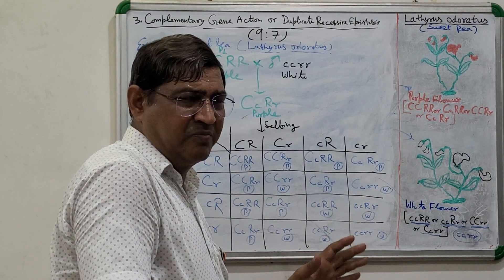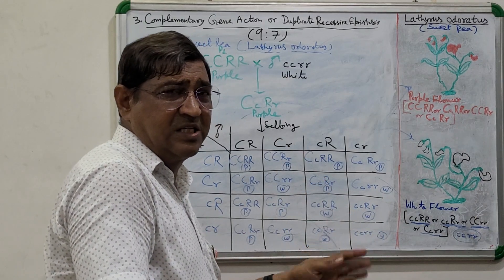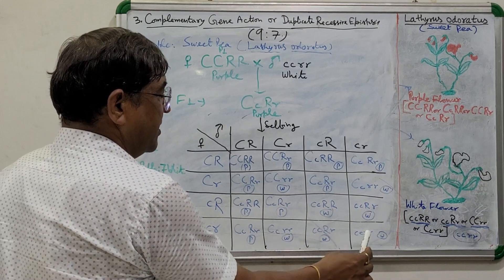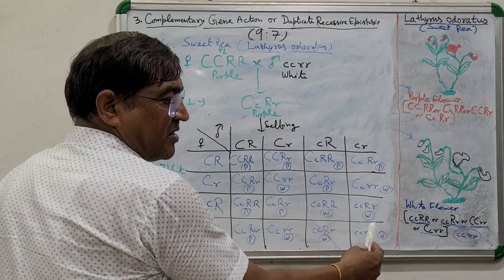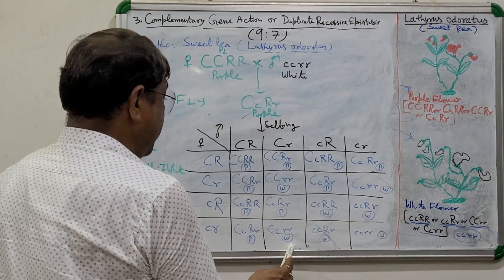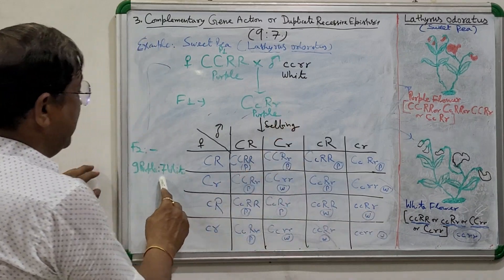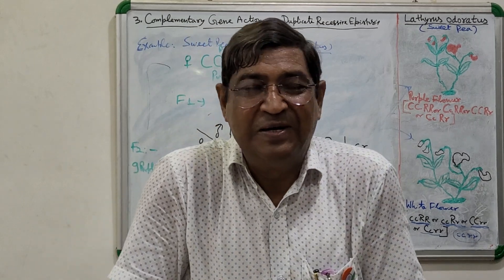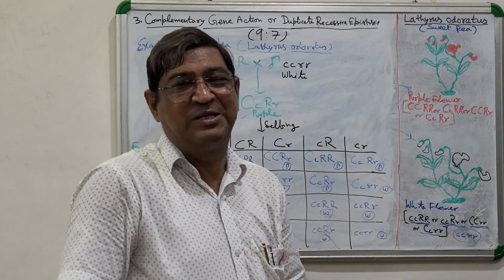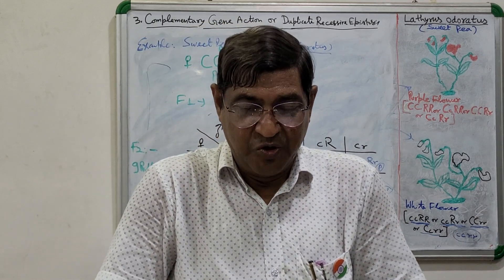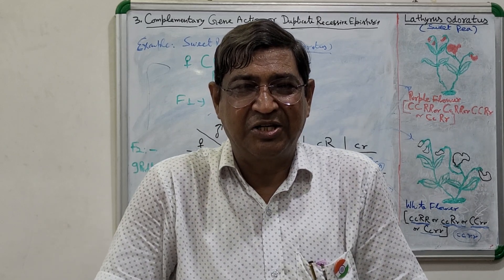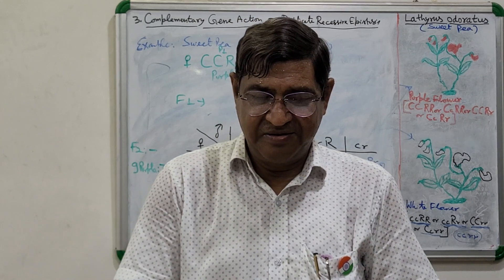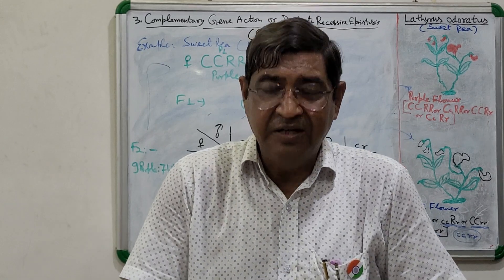Making all combinations in the checkerboard: wherever any locus is in homozygous recessive state, you get white — counting one, two, three, four, five, six, seven white. Capital C small c small r small r gives white; small c small c small r small r gives white. So seven white are obtained. Counting the purple gives nine purple. The 9:7 ratio is found in complementary gene action, whether you call it complementary gene action or duplicate recessive epistasis — both are the same thing. Thank you very much.